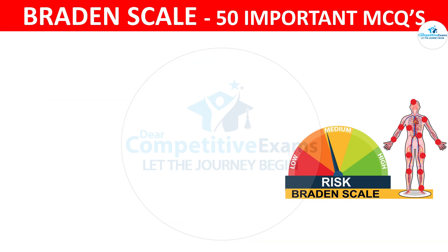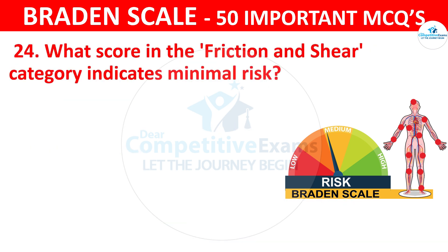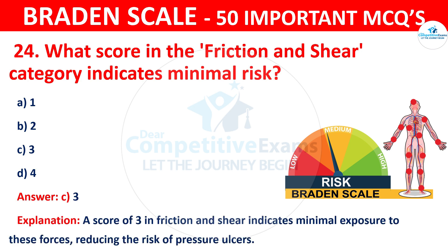Question number twenty-four: What score in the friction and shear category indicates minimal risk? The options are one, two, three, or four. The correct answer is C — three. A score of three in friction and shear indicates minimal exposure to these forces, reducing the risk of pressure ulcers.